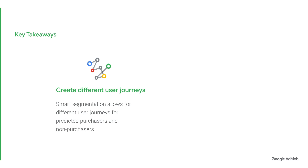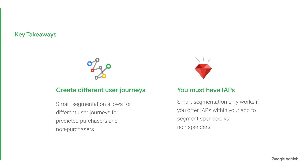To recap: one, Smart Segmentation allows you to create different user journeys for predicted spenders and predicted non-spenders. Two, Smart Segmentation only works if you offer IAPs within your app, as it looks at segmenting spenders versus non-spenders. Thank you for watching this Google AdMob tutorial. We hope you found it useful. Be sure to stay tuned for our second video on Smart Segmentation recipes that will make your implementation much easier.